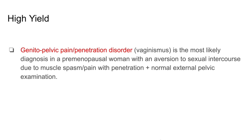If a pre-menopausal woman presents with an aversion to sexual intercourse due to muscle spasm or pain with penetration, but they have a normal external pelvic examination, then you need to suspect genitopelvic pain or penetration disorder, also called vaginismus.